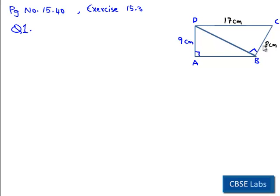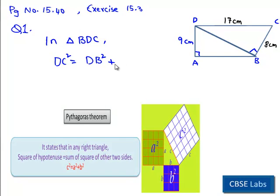Now here we have base BC and hypotenuse 17 centimeters. So to get the other side which is BD, we have to apply Pythagoras theorem. According to Pythagoras theorem, in right angle triangle BDC, square of hypotenuse, which is DC square, is equal to sum of the squares of other two sides, which is DB square plus BC square.